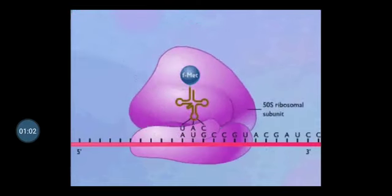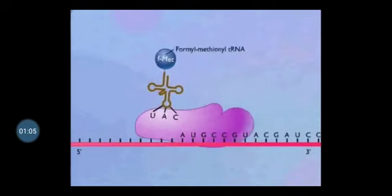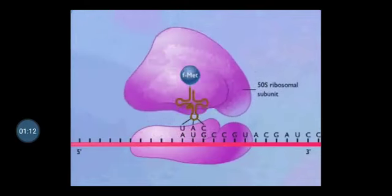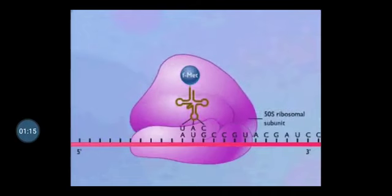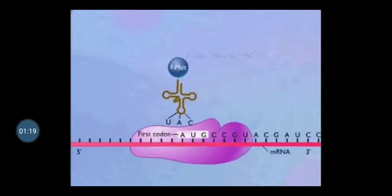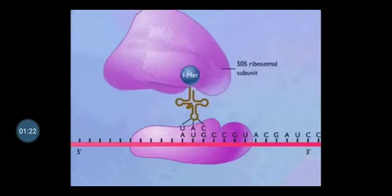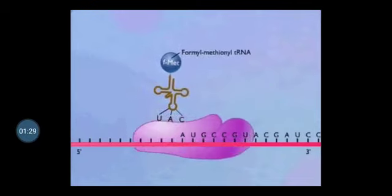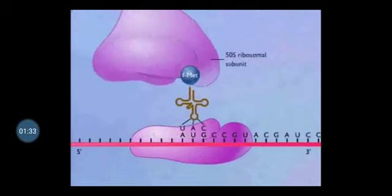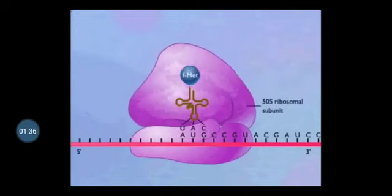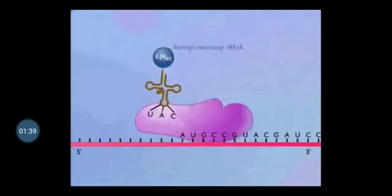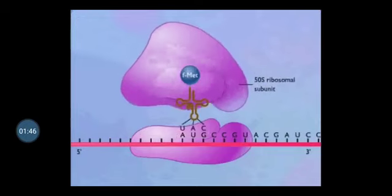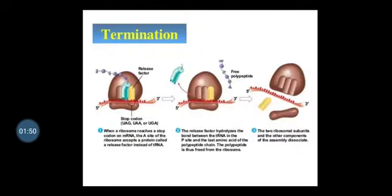AUG always binds with the transfer RNA carrying methionine. In prokaryotes, the methionine is formylated, so it is called fMet-tRNA, that is formyl-methionine transfer RNA. This formyl-methionine tRNA first binds with the messenger RNA along with the 30S ribosome, and then the 50S ribosome binds to make an initiation complex. This whole process is assisted by initiation factors IF1, IF2, and IF3.